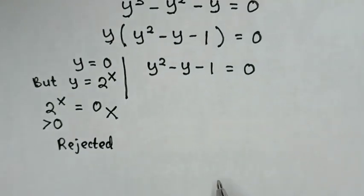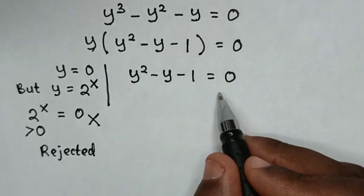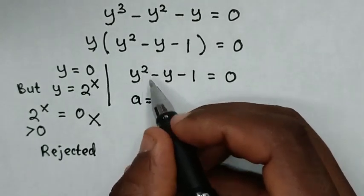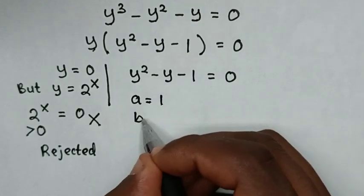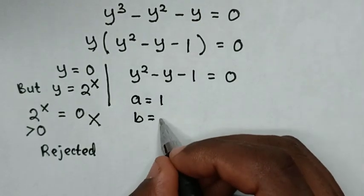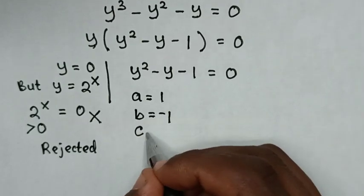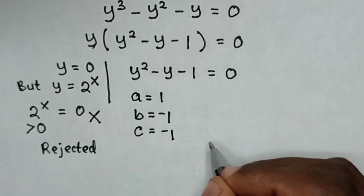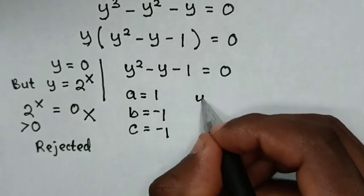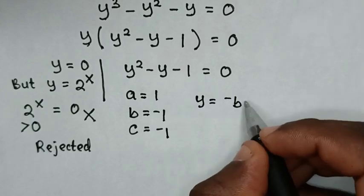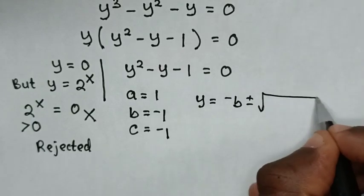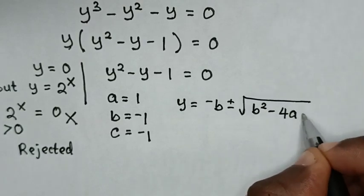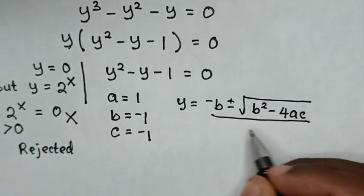To solve the second solution, which is a quadratic equation, we identify: a is equal to the coefficient of y squared, which is 1; b is equal to the coefficient of y, which is negative 1; and c is equal to the constant, which is negative 1. From the quadratic formula, y is equal to negative b plus or minus square root of b squared minus 4ac, all over 2a.